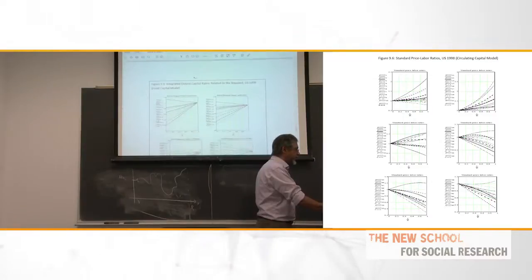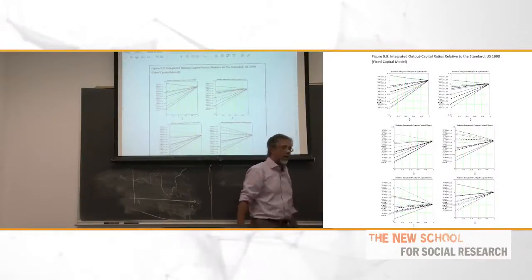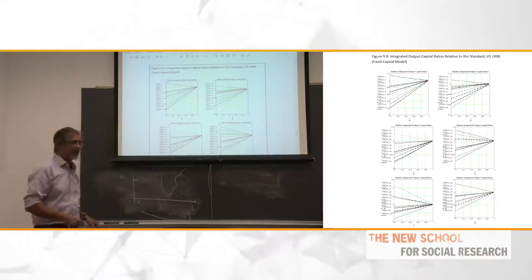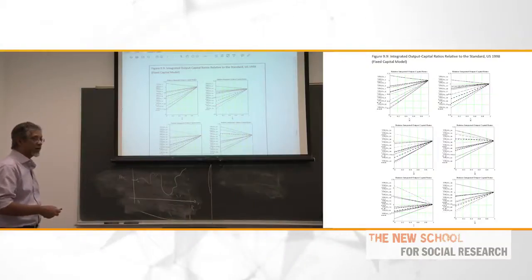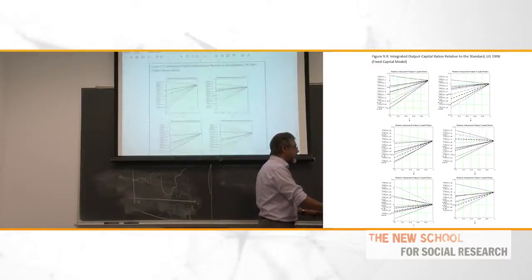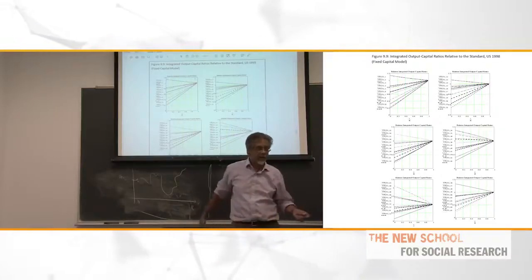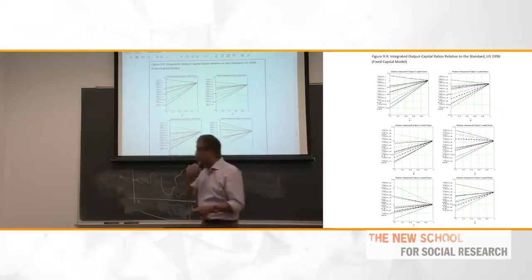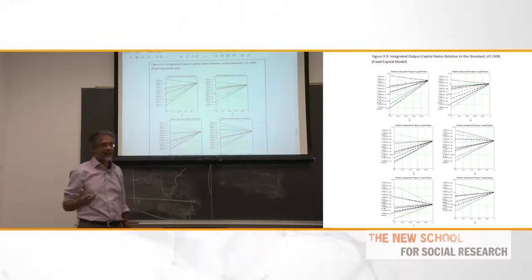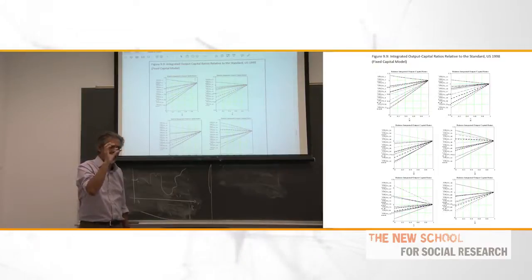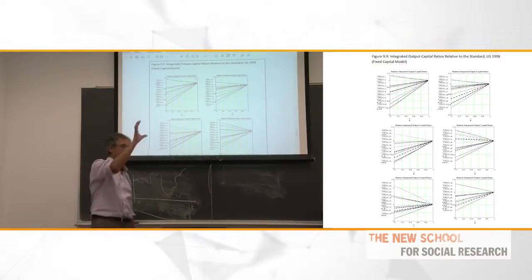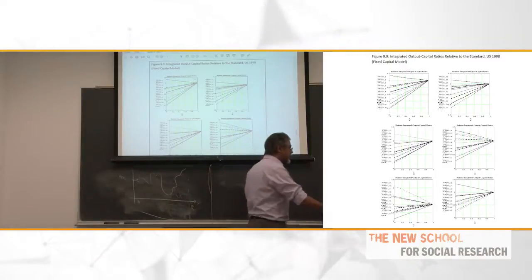Now see what happens when you include fixed capital into the story. These are different sectors from the US input-output table — I think there are 75 or 73 sectors. When you include fixed capital, suddenly these things all become very linear. I copied the wrong graph — this is the graph of the output-capital ratios, that famous V sub R, which is linear. And the corresponding price graph is also linear. So imagine that this is the price graph — it goes from one, and you'll find that they're all almost linear. There are very, very few wiggles, and they're all linear except when very close to one, where the feedback effect can pull you over.